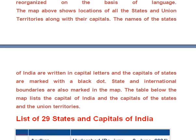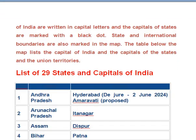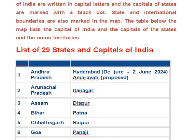Now let's discuss the list of 29 states and capitals of India. The states will be listed alphabetically from A to Z. First: Andhra Pradesh — capital is Hyderabad.